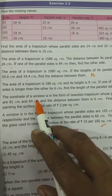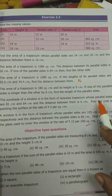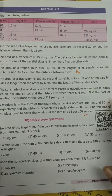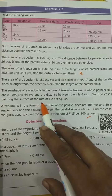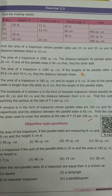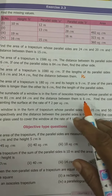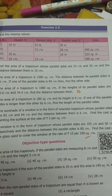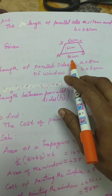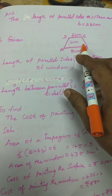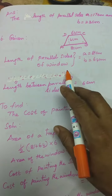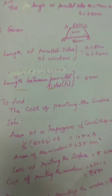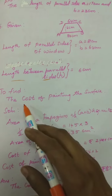We shall see the sixth problem. The sunshade of a window is in the form of an isosceles trapezium whose parallel sides are 81 cm and 64 cm, and the distance between them is 6 cm. Find the cost of painting the surface at the rate of rupees 2 per square cm. Given: A is equal to 81 cm, B is equal to 64 cm, H is equal to 6 cm. To find the cost of painting the surface.